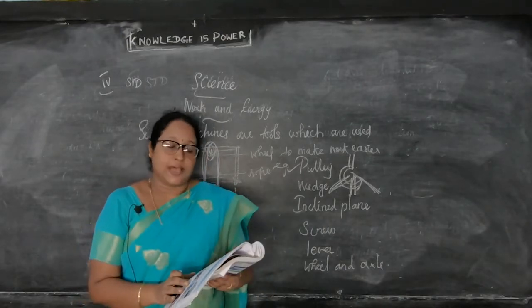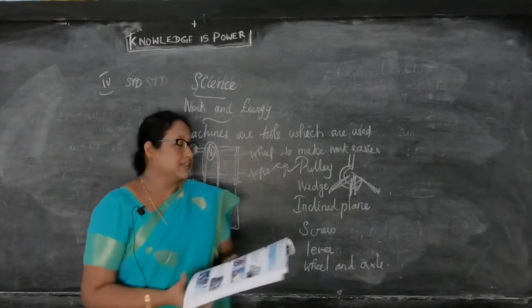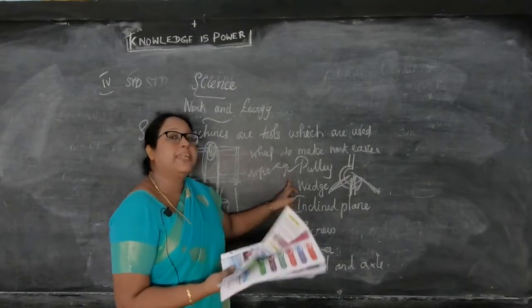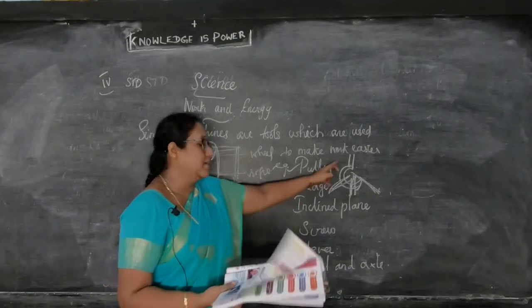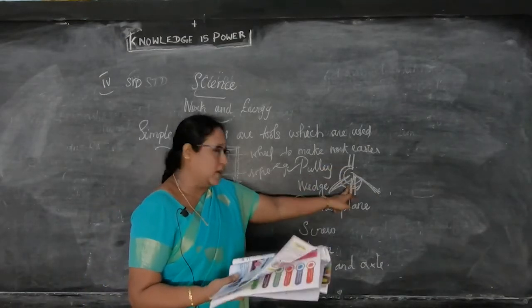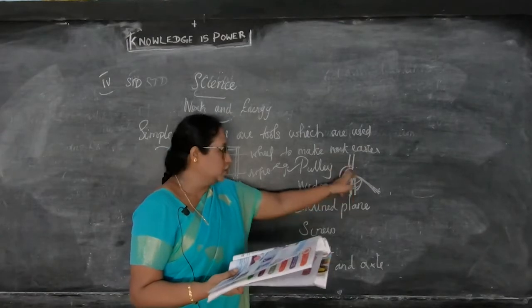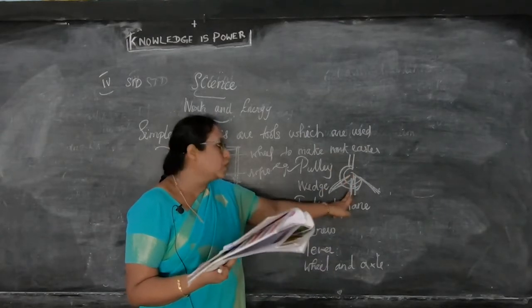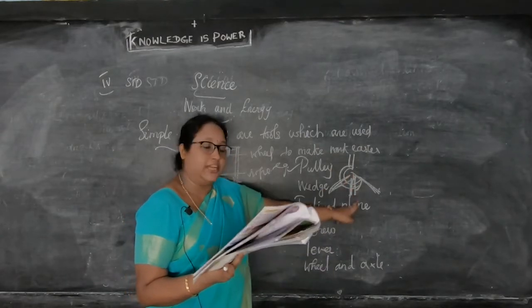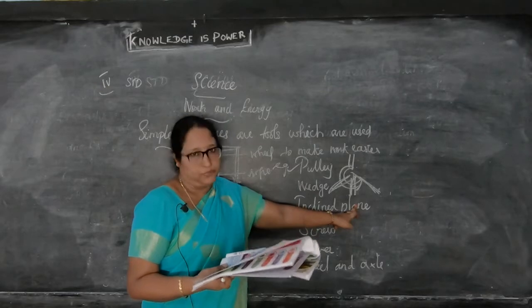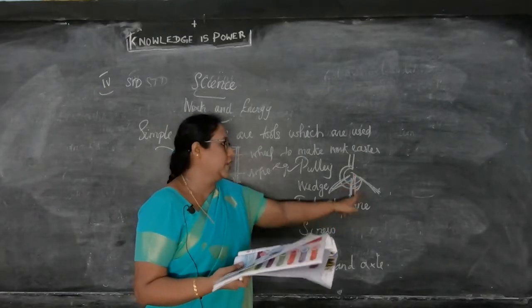The example for pulley is a crane. It is a machine made up of a wheel with a groove around it, and a rope or chain passes around the pulley, allowing it to lift objects with more force.